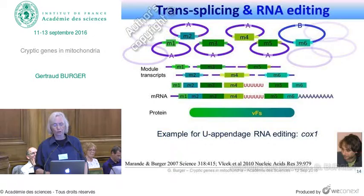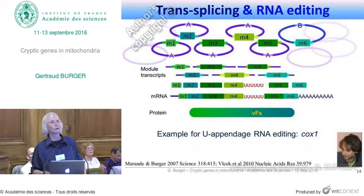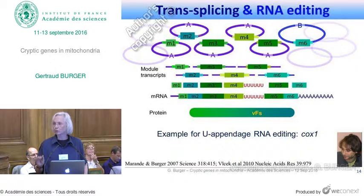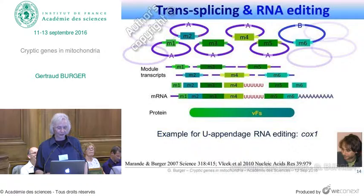Looking more carefully, it's not just trans-splicing that is going on. There is also RNA editing in certain genes. For example, COX1, which specifies cytochrome oxidase subunit 1, has six U's inserted between modules 4 and 5. Actually, they are not truly inserted — the six U's are appended prior to trans-splicing of modules 4 and 5. We call this U appendage editing.